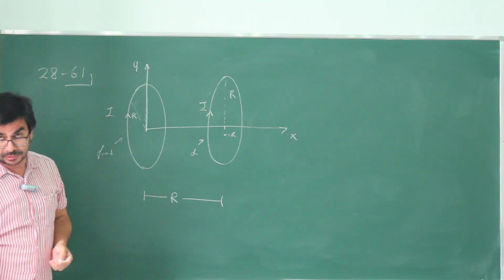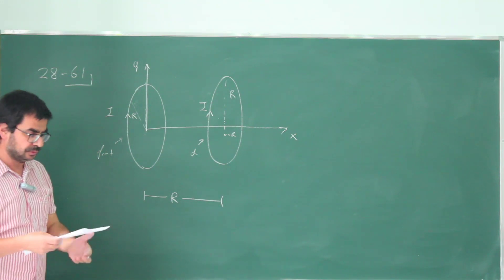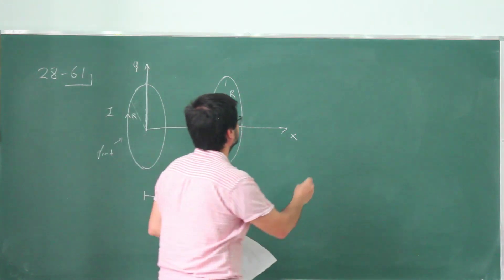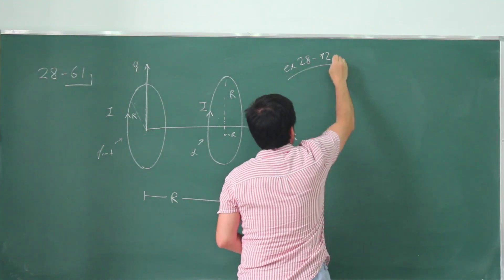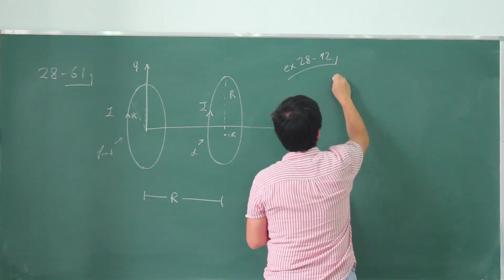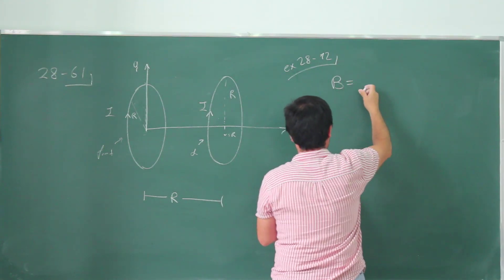Now, to do this, I'm going to use a result that we already found from example 28-12. So this is already calculated in class, so I'm just going to use this result. This was the magnetic field for a ring.